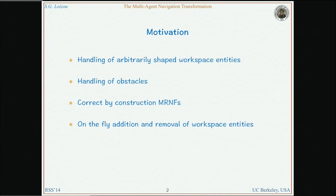During the last decade, we have seen attempts to extend the navigation functions to the case of multiple robots with relevant success. However, these extensions have inherited both the good and the bad traits of navigation functions. There are also additional problems that appeared in the multi-robot navigation functions literature. We are tackling the inherited problems that have to do with tuning, where in navigation functions you construct a candidate navigation function, and by tuning you try to eliminate the local minima.